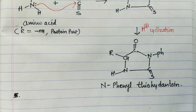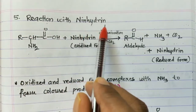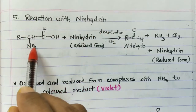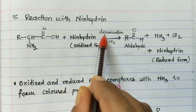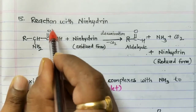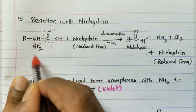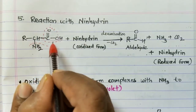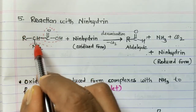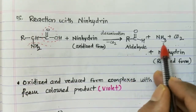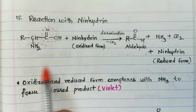The last reaction is the important reaction with ninhydrin. When amino acids react with the oxidized form of ninhydrin, the reaction undergoes deamination and decarboxylation — CO2 and NH3 are eliminated. Ninhydrin supplies oxygen to the alpha carbon, which is converted into an aldehyde, so you get aldehyde, ammonia, and carbon dioxide. As ninhydrin supplies oxygen, it gets reduced.